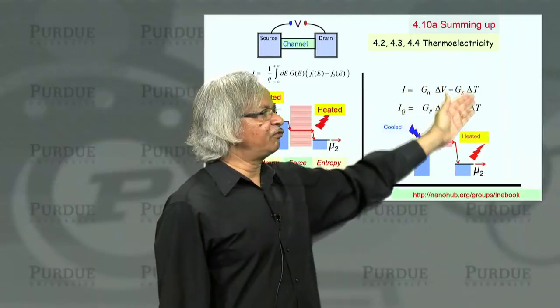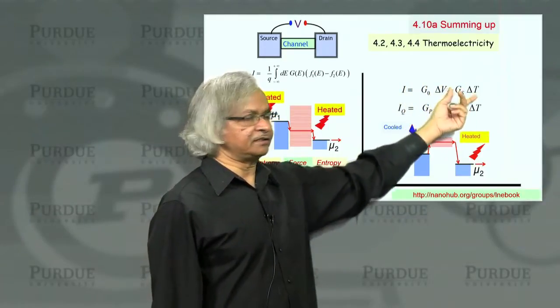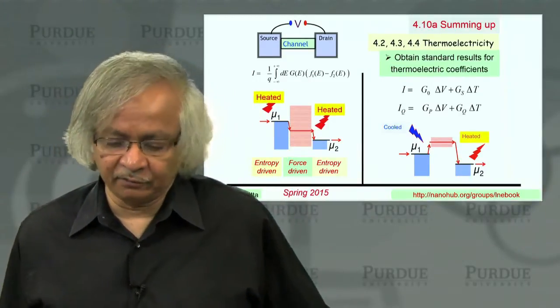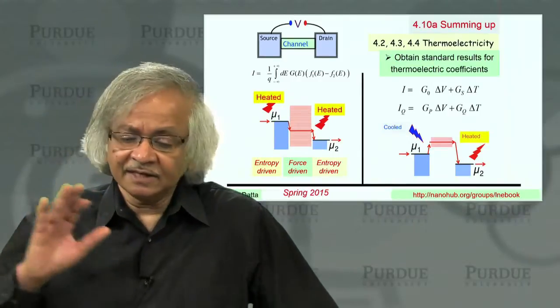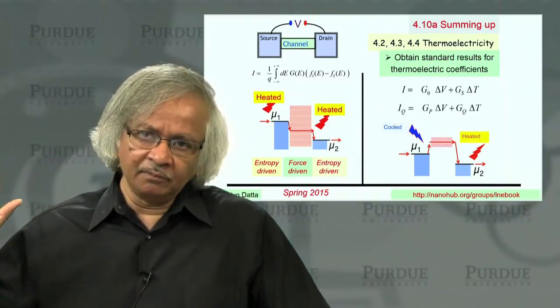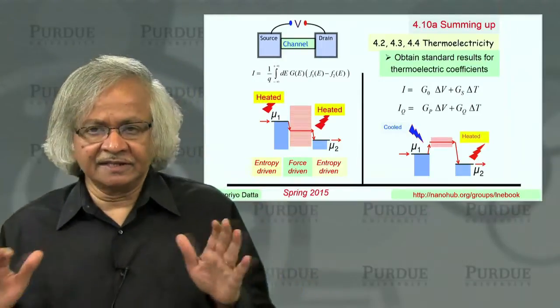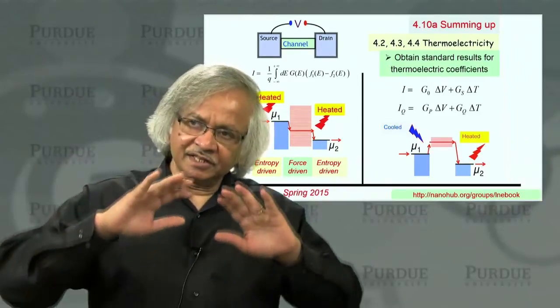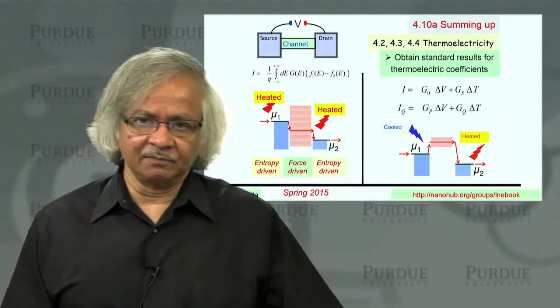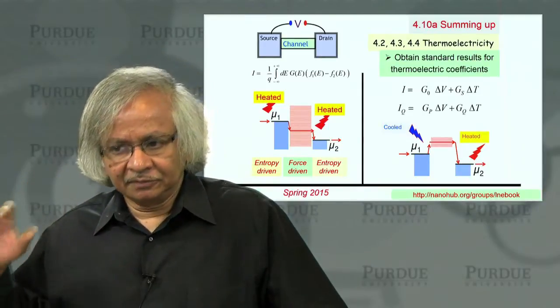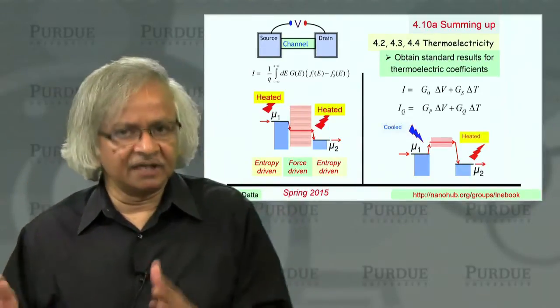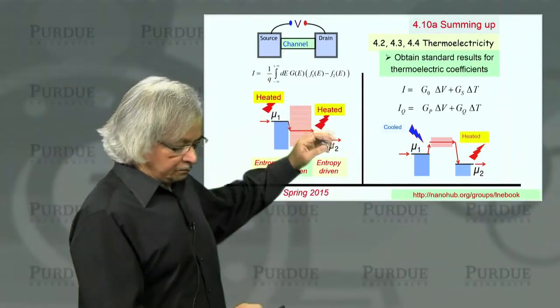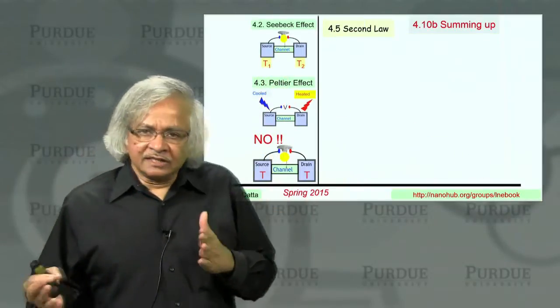And so overall, you have these four thermoelectric coefficients. And what we did was we obtained the expressions for these thermoelectric coefficients using this point of view. And these are exactly the standard results that you normally get from Boltzmann equation. And of course, in general, as I've mentioned before, whatever we are talking about in this course, it's just a way of looking at these results. But the basic benchmark equation is the Boltzmann equation. All results generally would follow from Boltzmann equation.